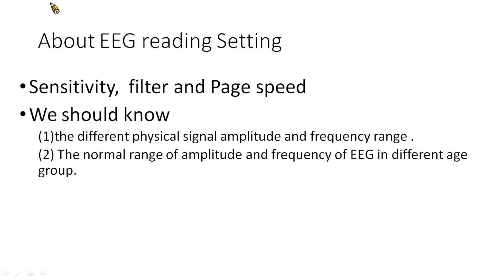Before reading EEG, we need to understand EEG settings, including sensitivity, filter, and paper speed. We also need to know the amplitude and frequency of different physiological signals such as ECG and EMG, as well as the normal range of amplitude and frequency of EEG in different age groups.